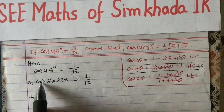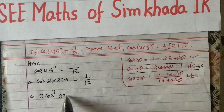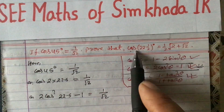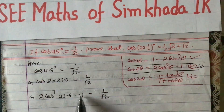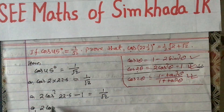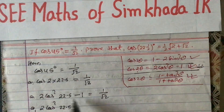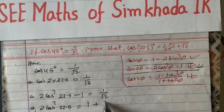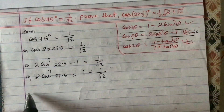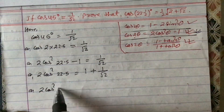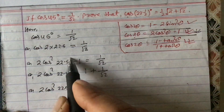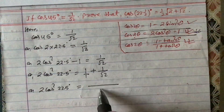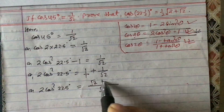Substituting: cos(2 × 22.5°) = 2cos²(22.5°) − 1 = 1/√2. Transposing −1 to the right side gives 2cos²(22.5°) = 1 + 1/√2. Taking LCM on the right side, the denominator is √2, giving 2cos²(22.5°) = (√2 + 1)/√2. Transposing 2 to the right side: cos²(22.5°) = (√2 + 1)/(2√2).